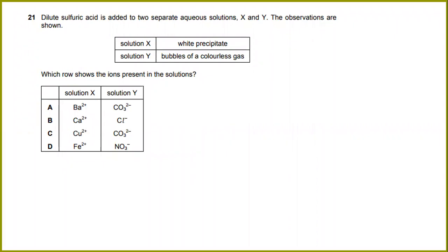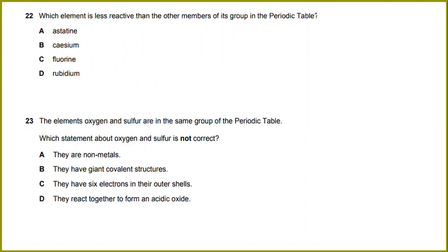Dilute sulfuric acid is added to two separate aqueous solutions X and Y. The observations are shown: solution X is white precipitate, solution Y bubbles of a colorless gas. Which role shows the ions present in the solution? Solution X will be barium and solution Y will be carbonate ion. The answer will be A.